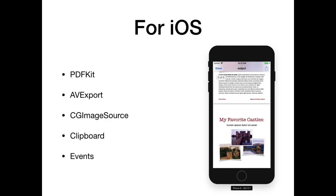For iOS we got a few upgrades. You can use the PDFKit functions to work on PDF documents on the iOS device. The AVExport functions can be used to convert videos. CGImageSource can be used to read over 20 image formats and get thumbnails as well as metadata. The Clipboard functions can read and put content on the clipboard in various formats. The Events functions can read and write your calendar or reminder database on the iOS device. All those functions also work on Mac.